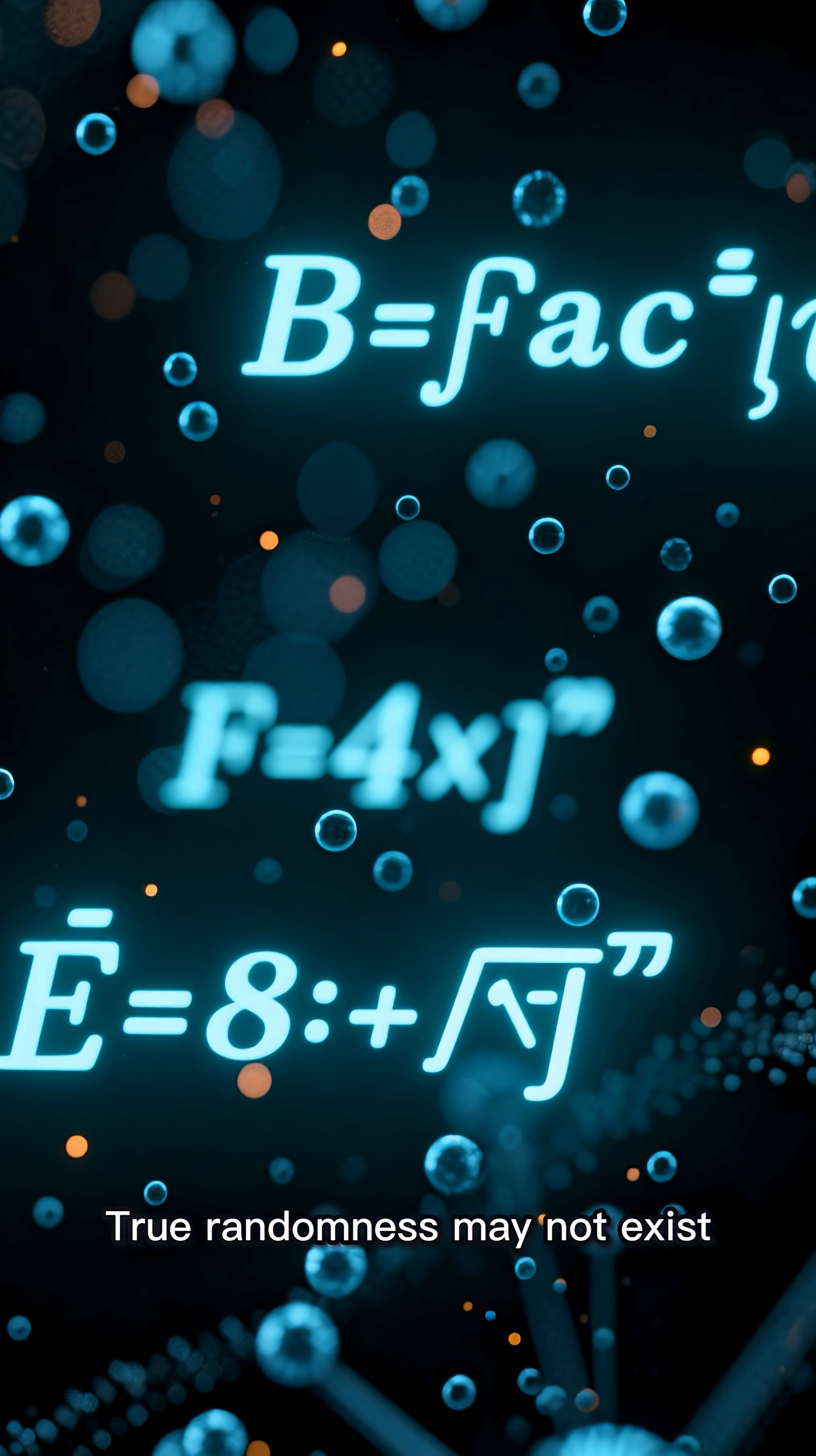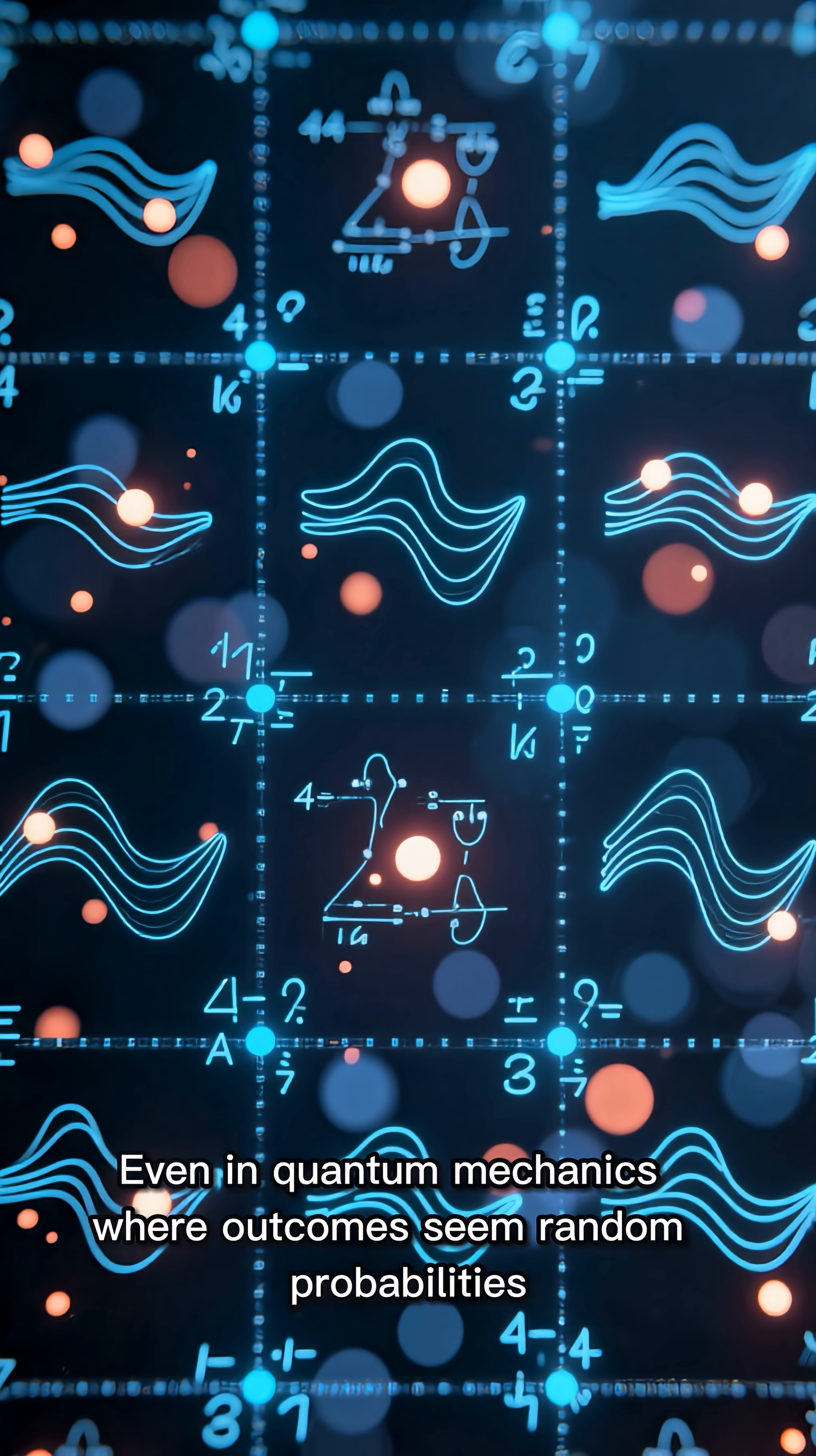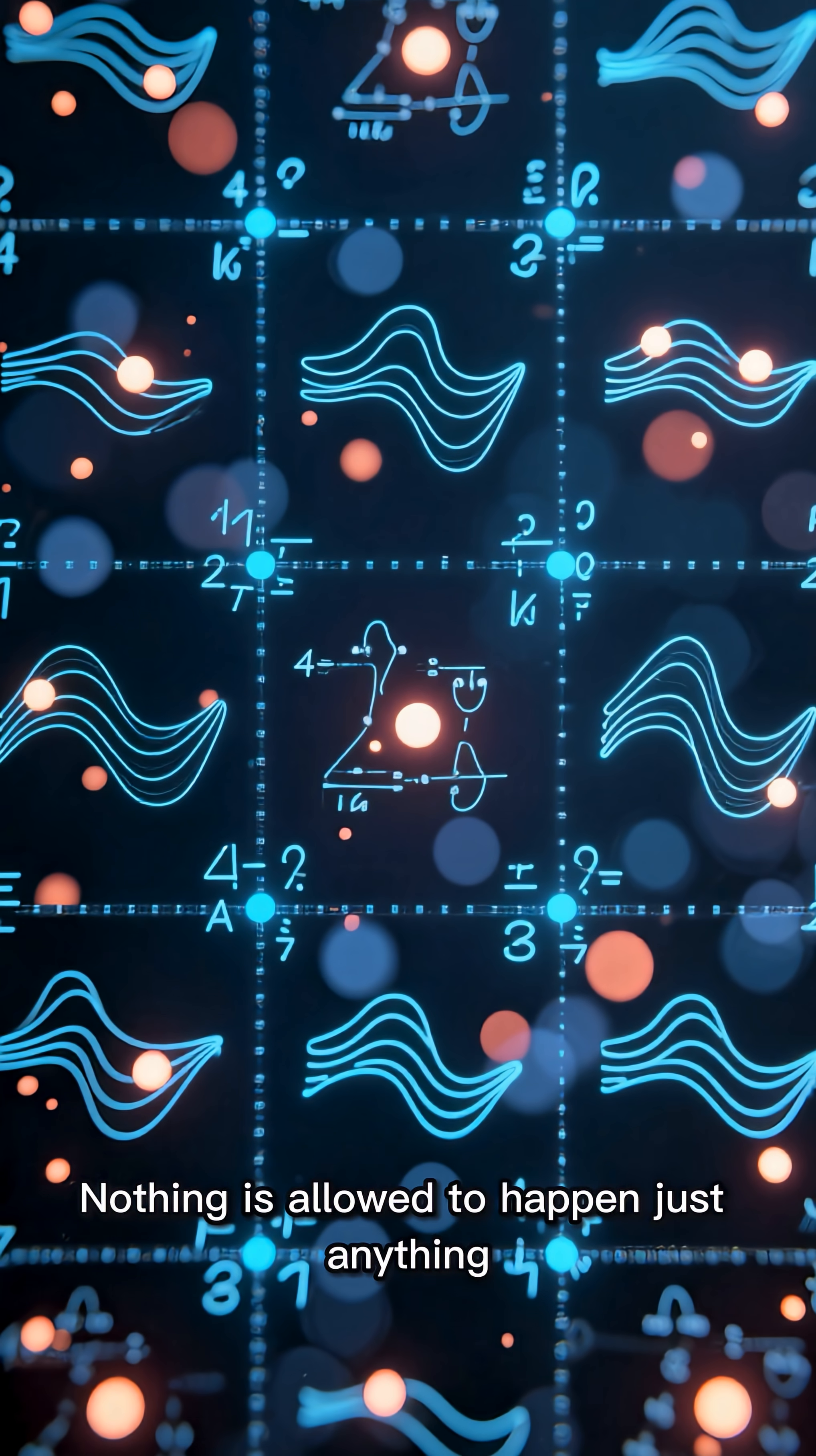True randomness may not exist. Even in quantum mechanics, where outcomes seem random, probabilities follow strict mathematical laws. Nothing is allowed to happen, just anything.